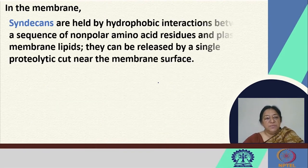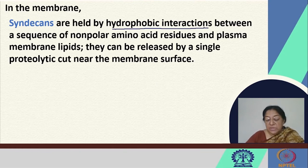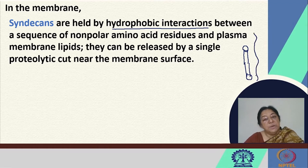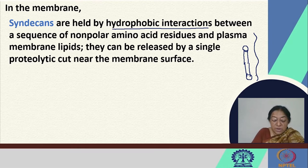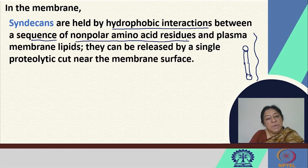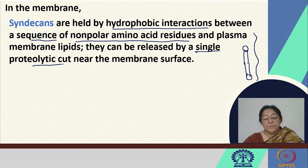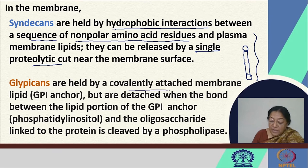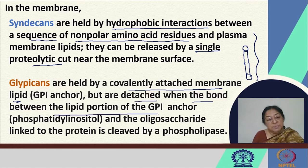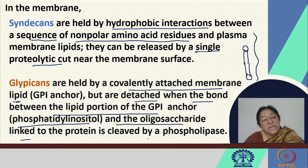Syndicans are held in the membrane by hydrophobic interactions because they are single transmembrane proteins, with a sequence of non-polar amino acid residues interacting with plasma membrane lipids. They can be released by a single proteolytic cut near the membrane surface. Glypecans are held by a covalently attached membrane lipid — the GPI anchor — and can be detached when the bond between the phosphatidyl inositol and the oligosaccharide linked to the protein is cleaved by an enzyme called phospholipase.